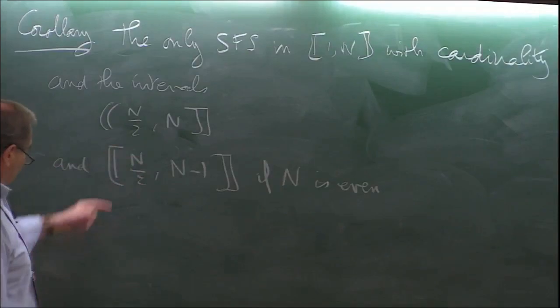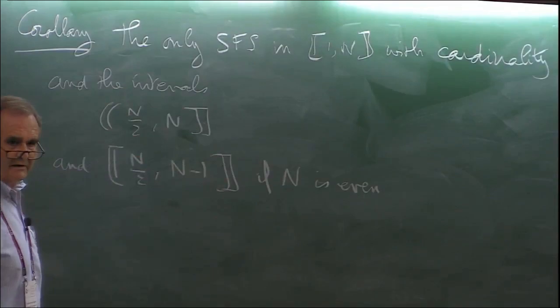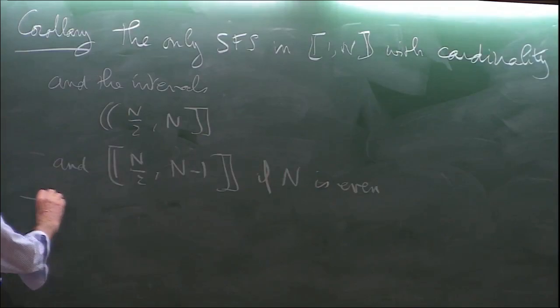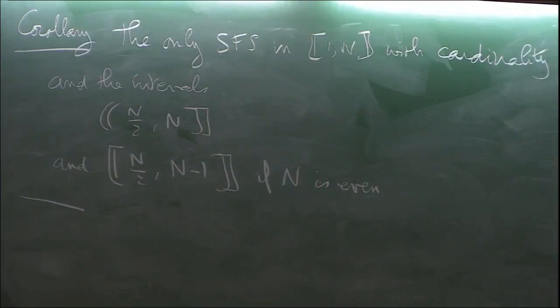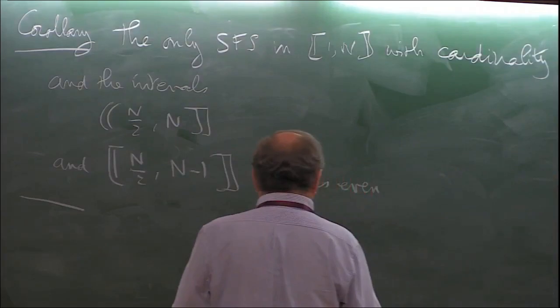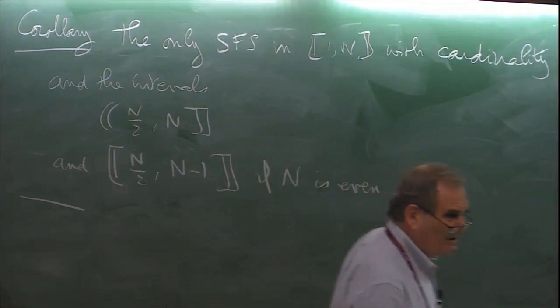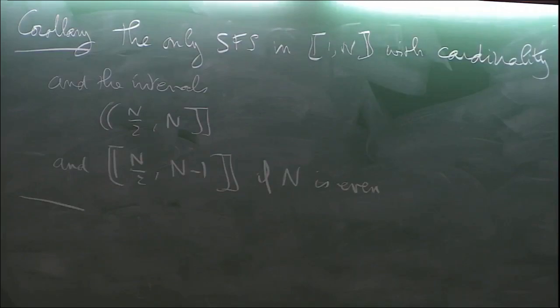We won't start the proof right now; it's better to concentrate tomorrow on the proof of this theorem. Let me give an example showing the Freiman theorem is sharp. Assume N is odd and large enough (N > 53), and let M satisfy 11N + 18 < 24M < 12N − 12. Don't focus too much on the constants — they're needed for precision but not the main point.